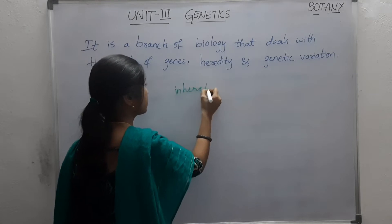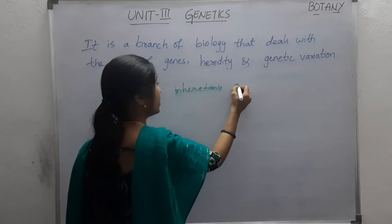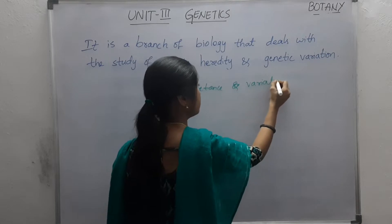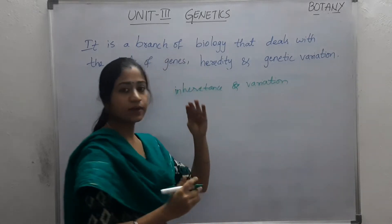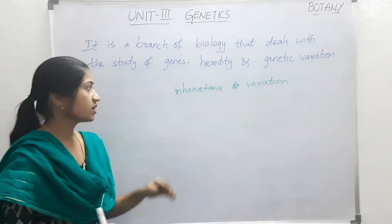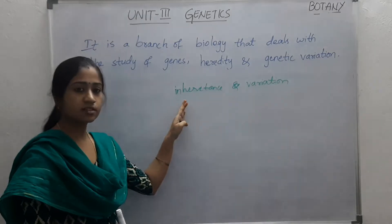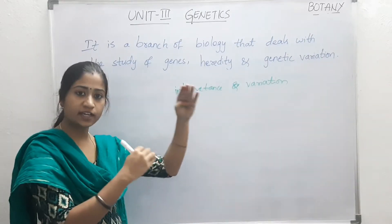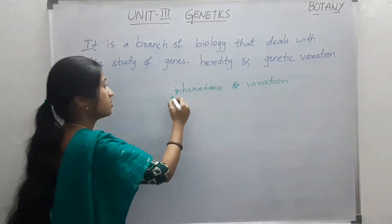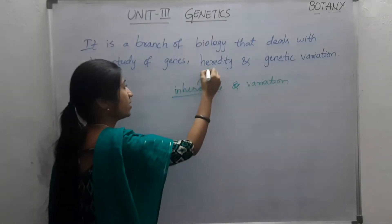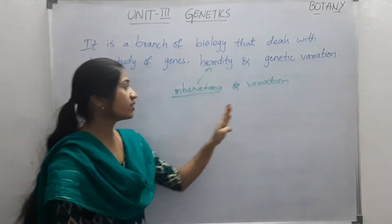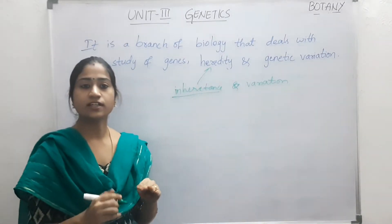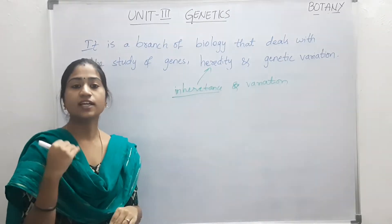Inheritance, as well as variation of characters, passes from parents to progeny. Inheritance is the process by which characters pass on from parents to progeny — this is the basis of heredity. And variation is the degree by which the progeny differs from their parent.